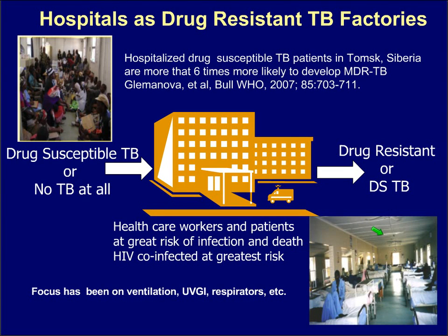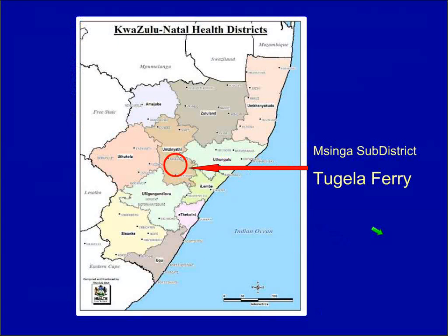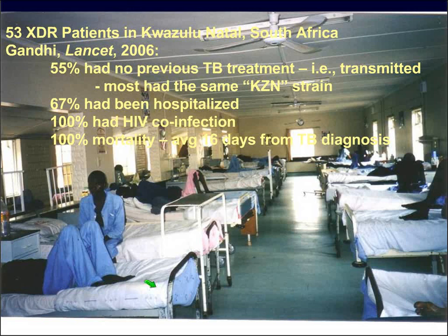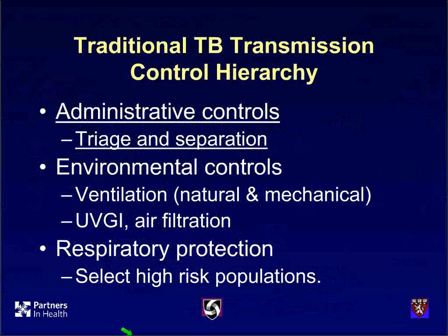This was the case in KwaZulu-Natal. This outbreak in rural South Africa caught our attention in 2006 when 53 XDR patients were identified, and the majority died in very short order. All of these folks were also HIV co-infected. It was shown by fingerprinting that patients were spreading TB one to another, and health care workers get caught up in this as well.